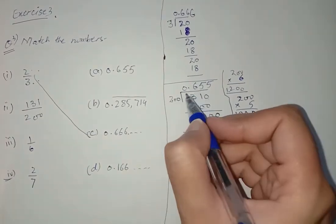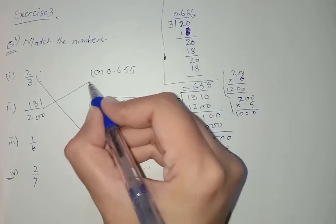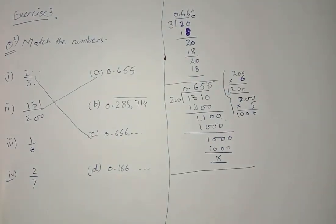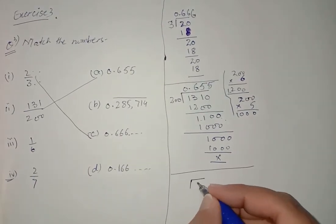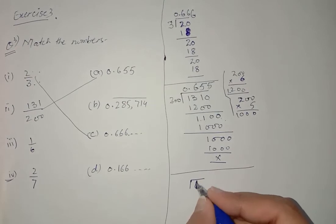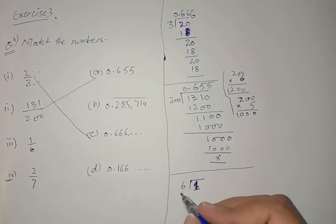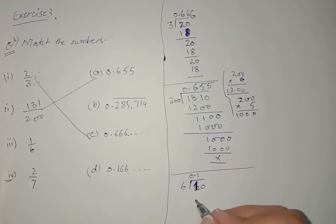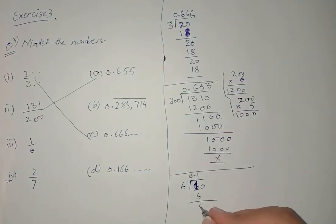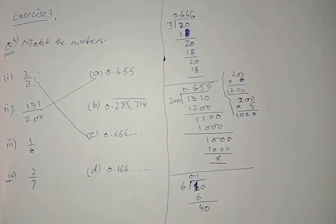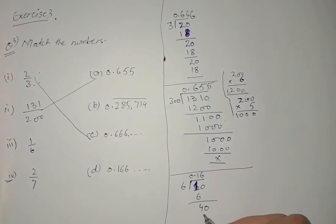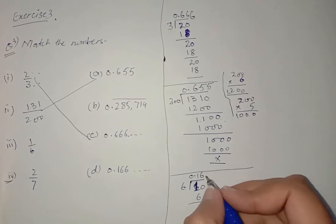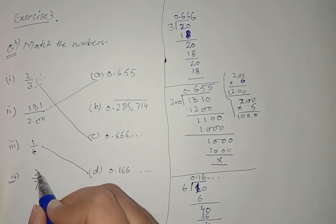Now 1/6, we have to do its rough part. 1 place in bracket and 6 out of the bracket. 1 doesn't come in the table of 6, so we can place 0 point. 6 times 1 is 6, 6 times 6 is 36, again 4 and so on, 0.666. So it is matched with this. 2/7 is also matched with B.